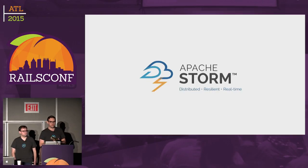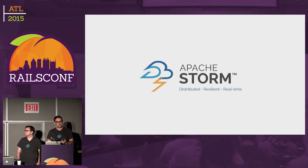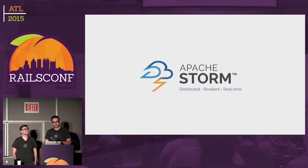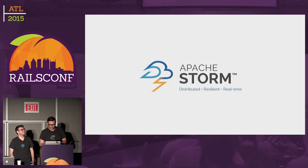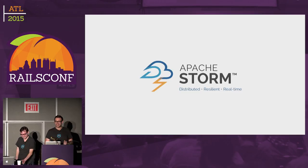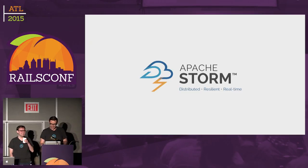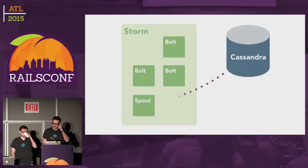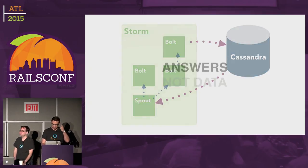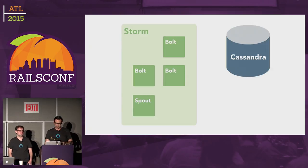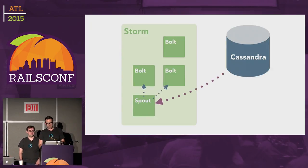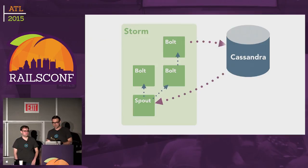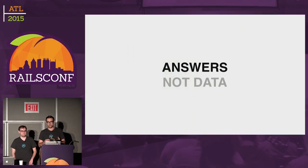Our backend in particular is built on Apache Storm — distributed, resilient, real time. We gave a talk on our architecture at last year's RailsConf, and hopefully you enjoyed that. This year we want to talk about a different high-leverage tool, which is Rust. Our timeline for Skylight — what really motivates us is how do we give our users real answers so we sift through all the data so they don't have to? As it turns out, doing this answers-not-data approach requires a lot of data.